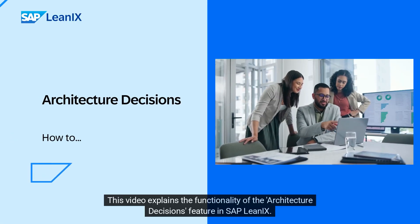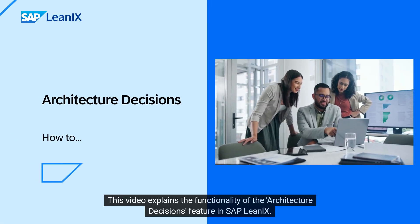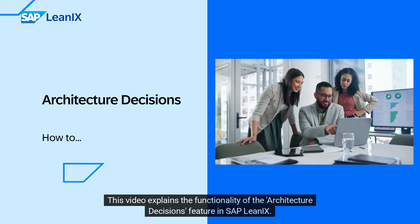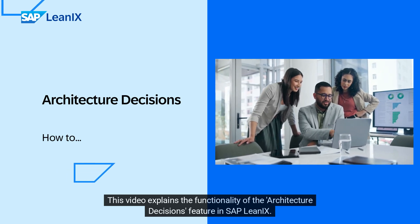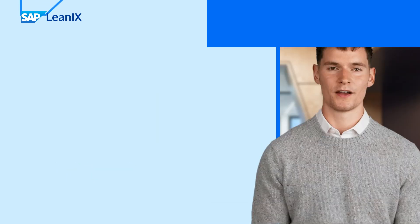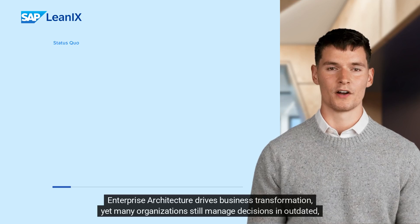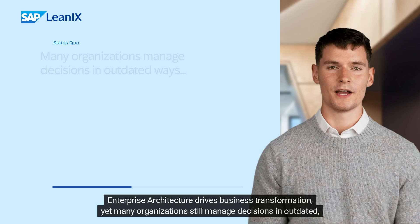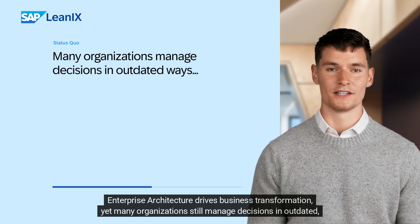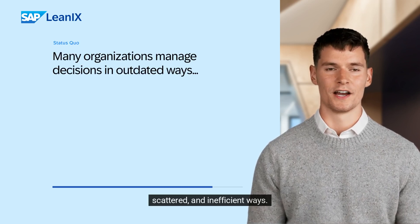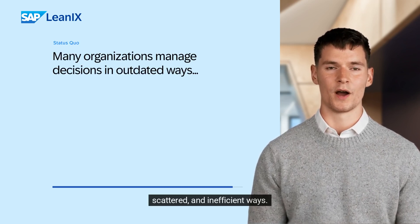This video explains the functionality of the Architecture Decisions feature in SAP LeanIX. Enterprise architecture drives business transformation, yet many organisations still manage decisions in outdated, scattered and inefficient ways.